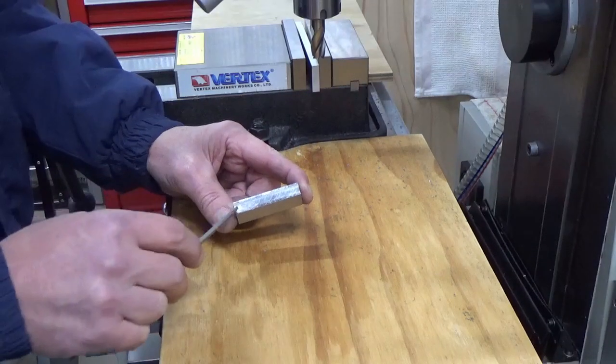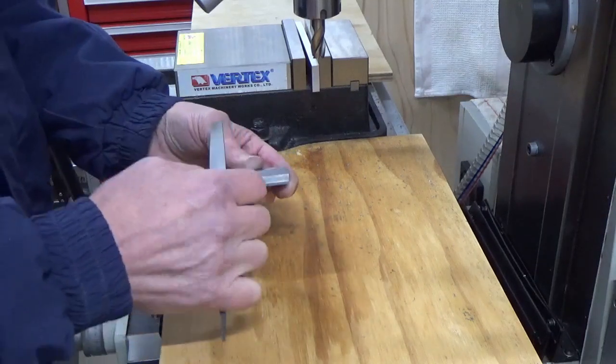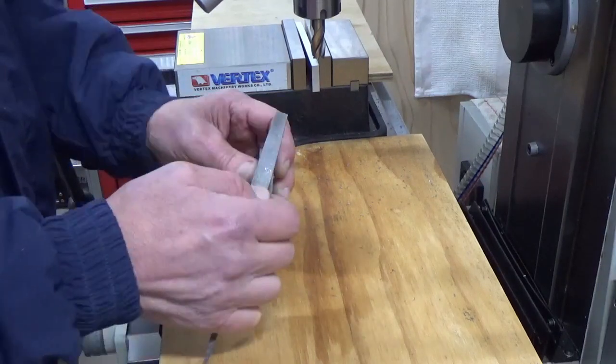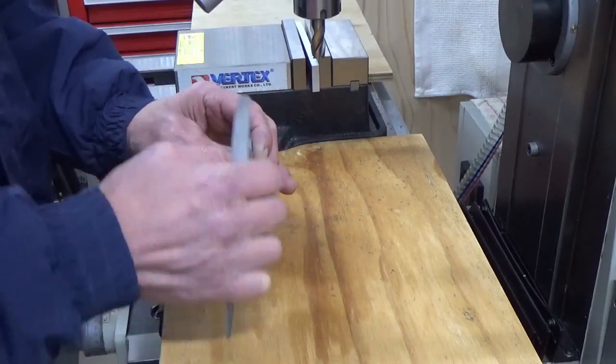So we just finished our second surface. As before, we'll just go through and make sure there's no burrs on our edges and get rid of those.